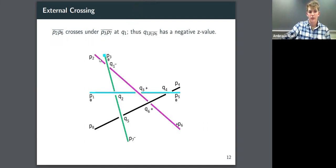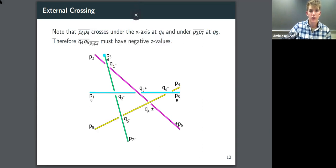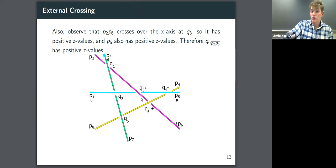So this pink line, P2, P6, crosses under P3, P7 at Q1. We know that Q1 must have a negative z-value. Also notice that P8, P4 crosses under the x-axis at Q4 and under P3, P7 at Q5. Therefore, we know that Q4, Q5, this segment of the yellow line must have negative z-values. Also observe that this pink line crosses over the x-axis right here. So we know that it must have positive z-values. Therefore, we know that this segment of the stick from here to the end must have positive z-values.